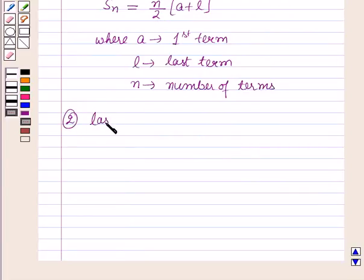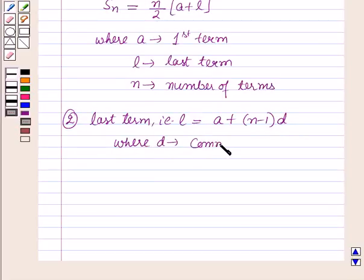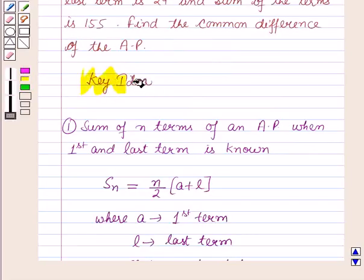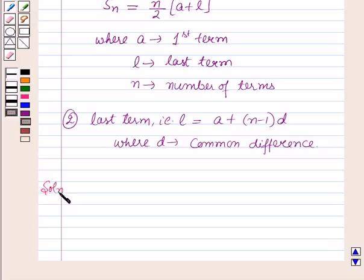Also, the last term in an AP, that is L, is equal to A + (n-1)D, where D is the common difference. Now these results will work out as a key idea for solving this question, and now we will start with the solution.